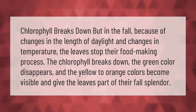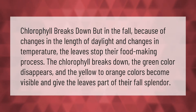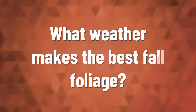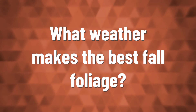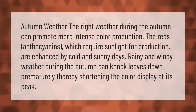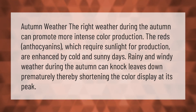In the fall, because of changes in the length of daylight and changes in temperature, the leaves stop their food-making process. The chlorophyll breaks down, the green color disappears, and the yellow to orange colors become visible, giving the leaves part of their fall splendor.